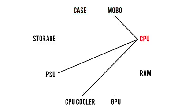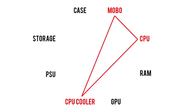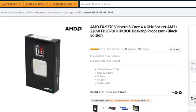That brings us to the CPU, which really only needs to play nicely with three other components, one of which we've just discussed. If you remember how to pair a motherboard with the CPU, and you found a CPU cooler that supports your motherboard, by the transitive property, your CPU and CPU cooler should also see no physical incompatibilities, since all three components support the same socket type.